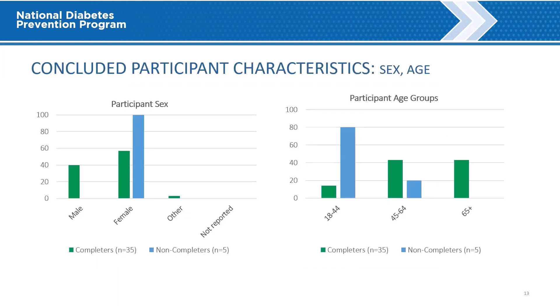Concluded Participant Characteristics: Sex and Age. The next section of the report looks at characteristics of completers and non-completers, which can assist organizations in enrolling and retaining participants. With respect to demographics, participant sex and age are shown here. Rather than showing age as reported, age entries have been grouped into three categories: 18–44, 45–64, and 65+.